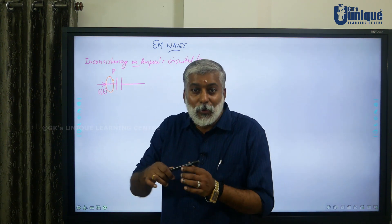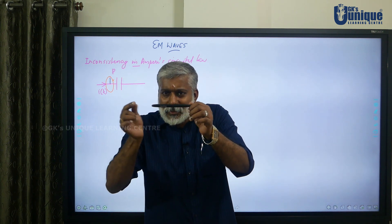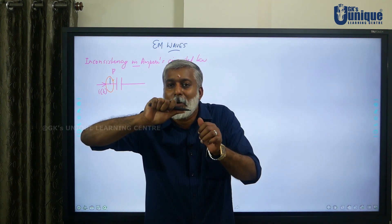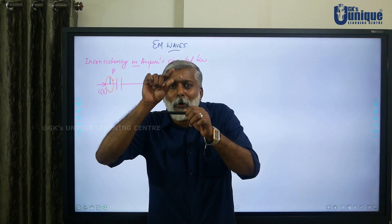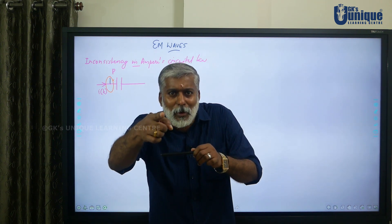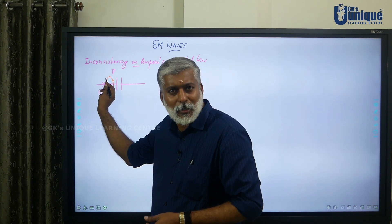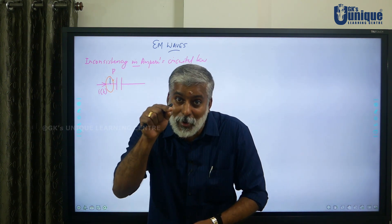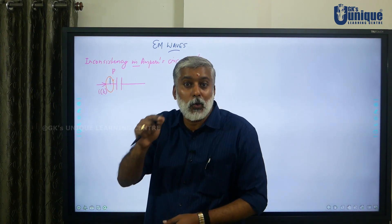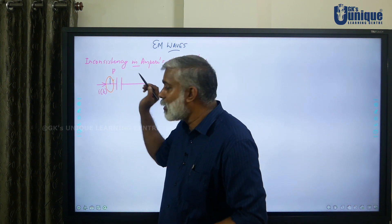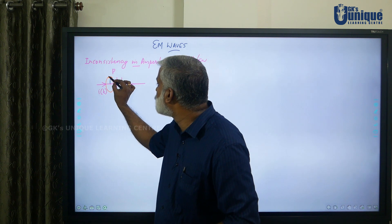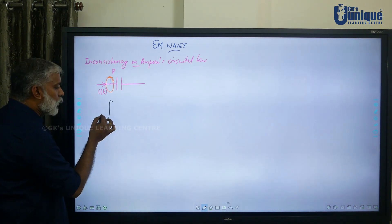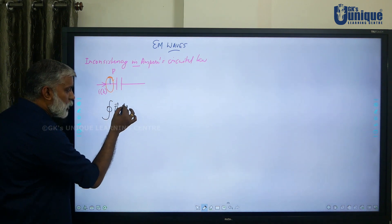The wire carries a current, and by the right-hand thumb rule you can find the magnetic field surrounding it. At point P, you draw a tangent to get the magnetic field. You can take a small element dl there. The angle between the magnetic field B and the element dl at point P is zero.